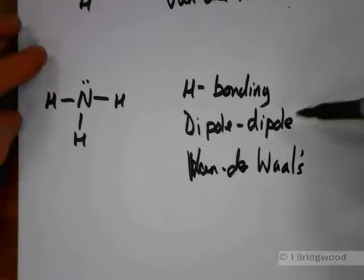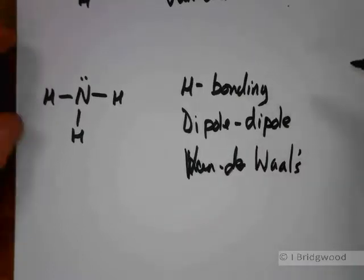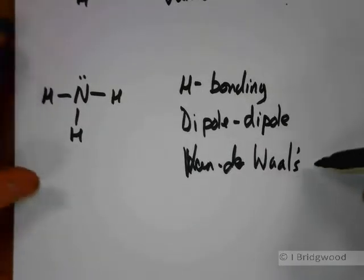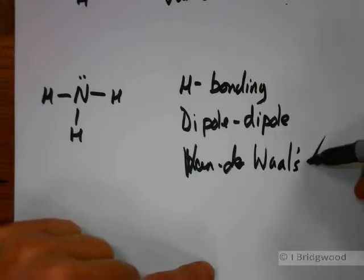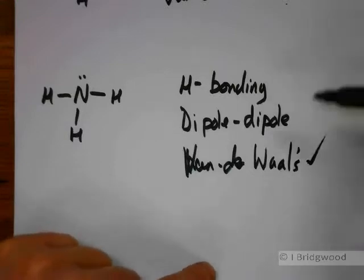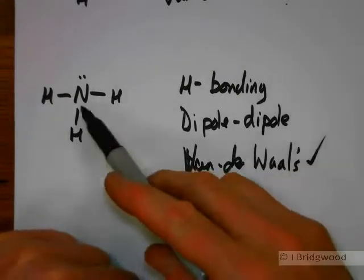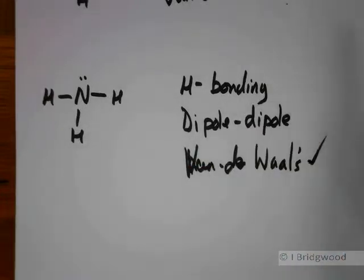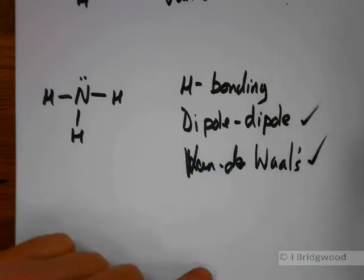Van der Waals, dipole-dipole, and hydrogen bonding. Well, we know that everything has van der Waals forces. So let's give that a tick. So it works that way. Dipole-dipole? Well, yes, there's an electronegativity difference between nitrogen and hydrogen. So it's polar molecules. And it's a pyramidal structure here. So therefore, yes, it looks like dipole-dipole interactions.